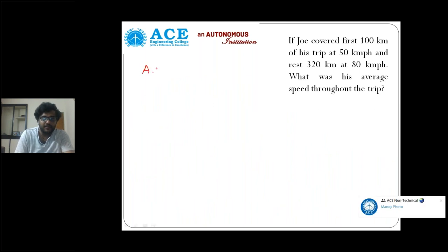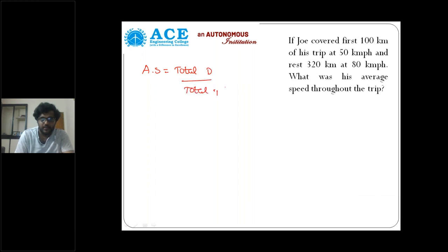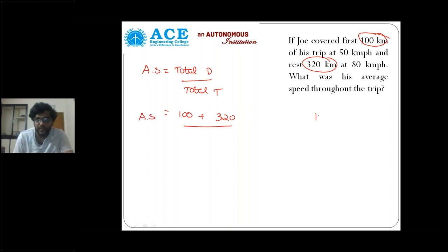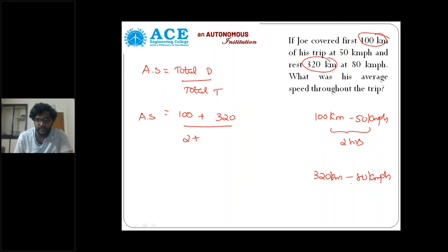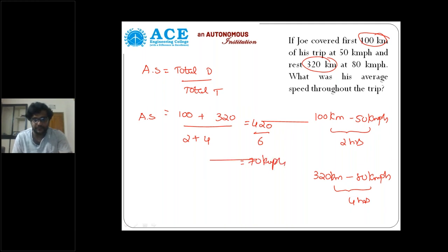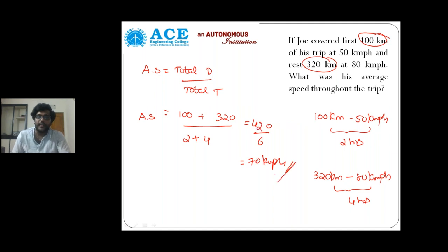Average speed is total distance by total time. Total distance is 100 plus 320 equals 420 kilometers. Traveling 100 kilometers at 50 km/h requires two hours. Traveling 320 kilometers at 80 km/h requires four hours. Total time is six hours. So average speed is 420 divided by 6 equals 70 kilometers per hour.